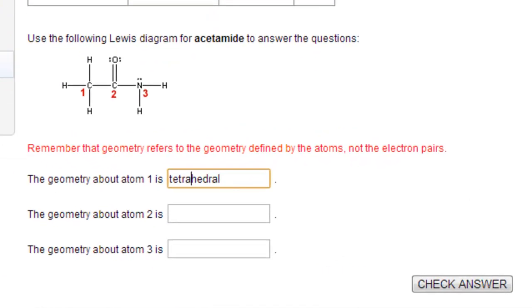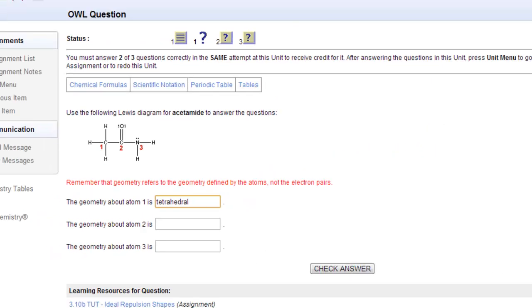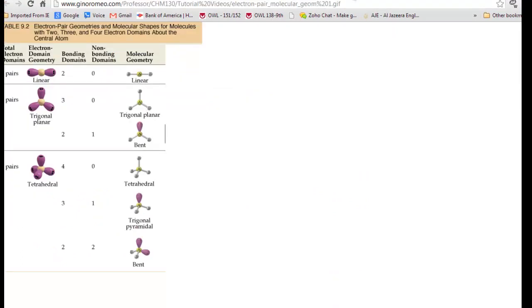Carbon number two, there are three links or three regions of electron density around that carbon and there are no lone pairs. If you look at the sheet, the molecular geometry would be trigonal planar, no lone pairs, three links.